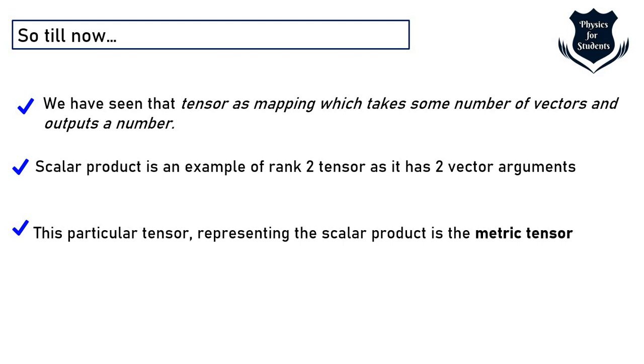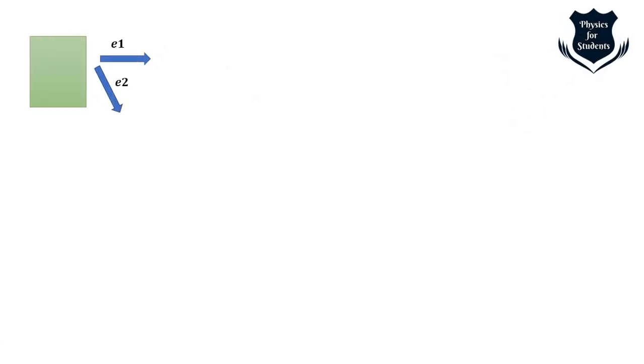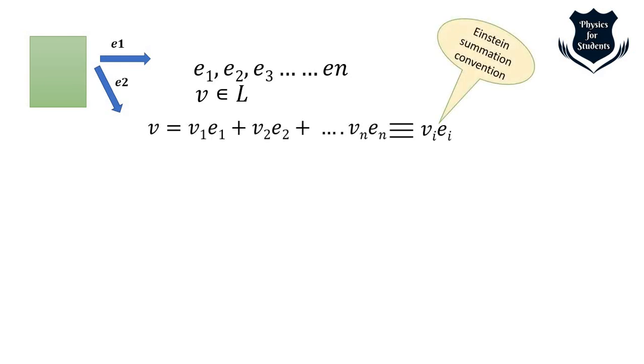This particular tensor representing the scalar product is the metric tensor which we deal in general relativity. Now for example if we take rank 2 tensor to keep things simple which takes two vectors e1 and e2 so a linear combination of the vector this one will lead to this one again I have used v sub i and e sub i as a linear combination.